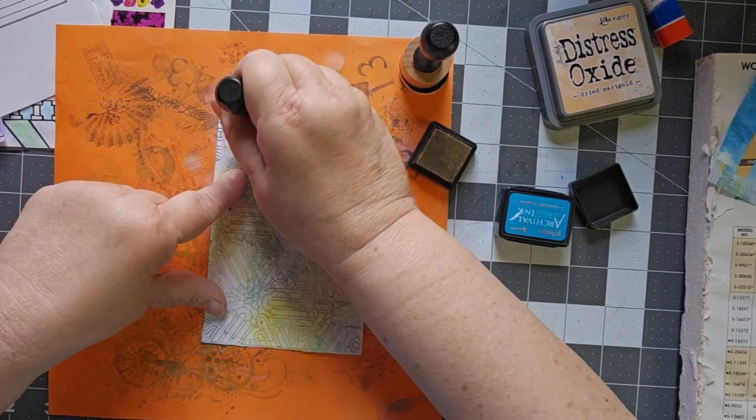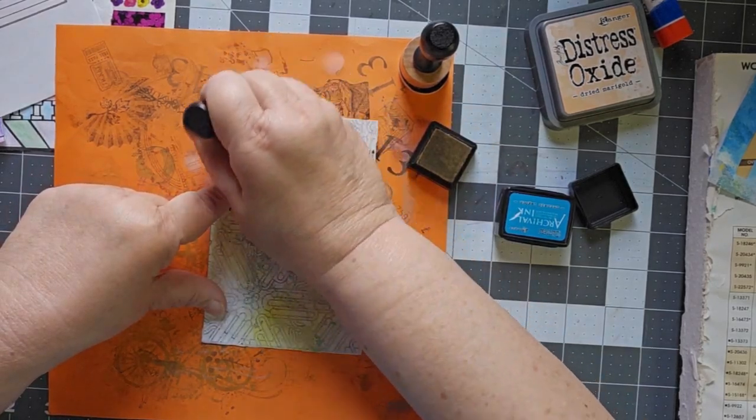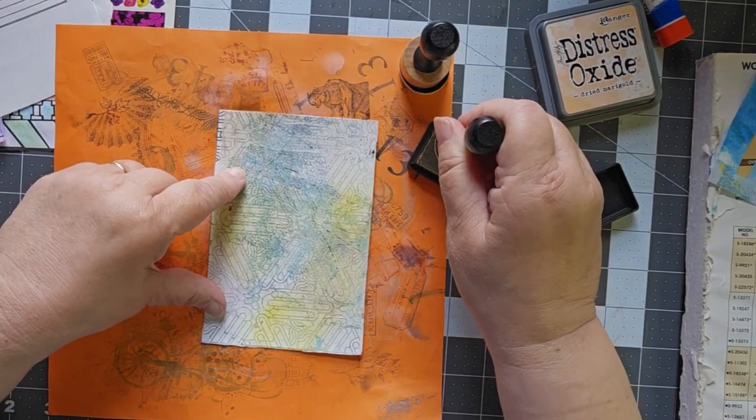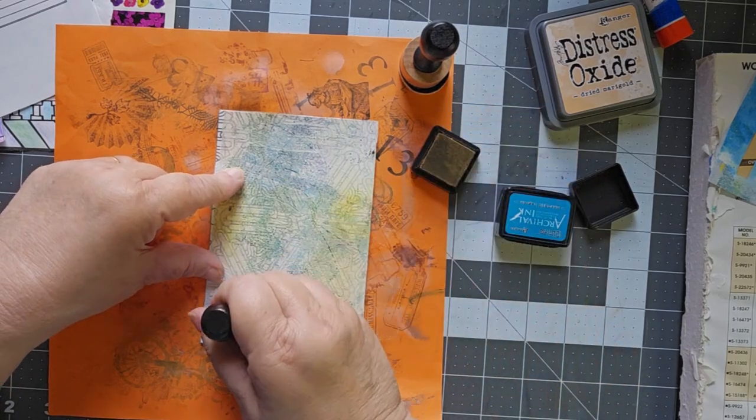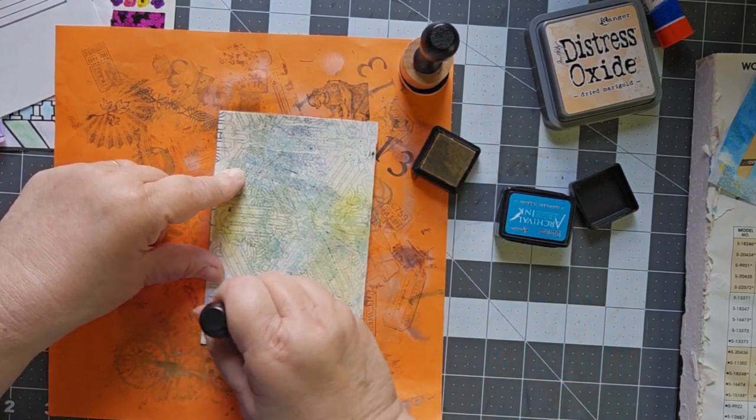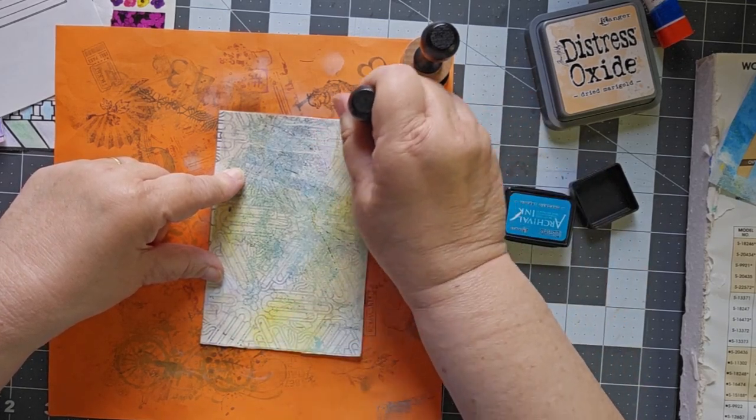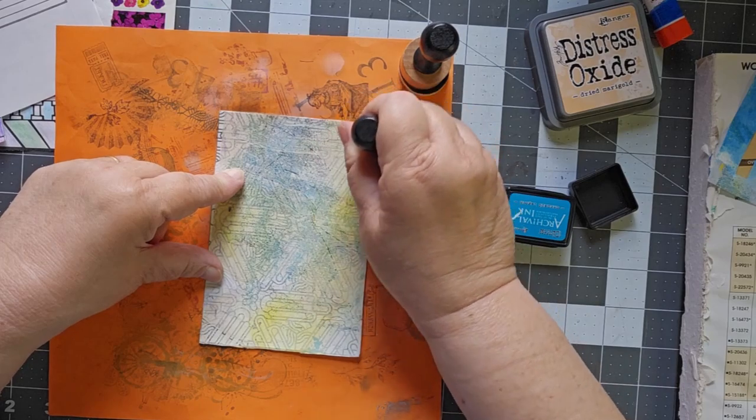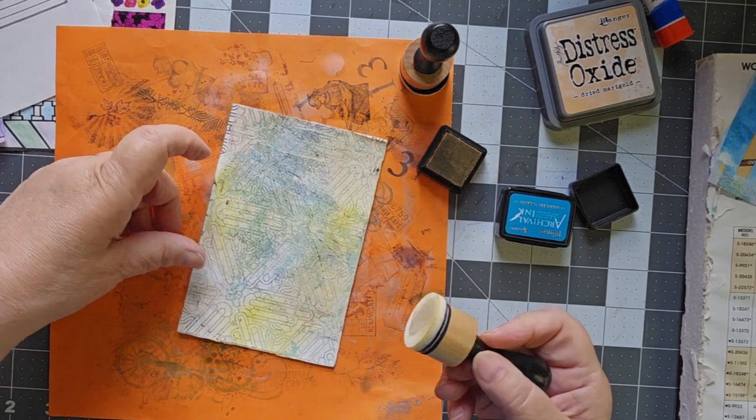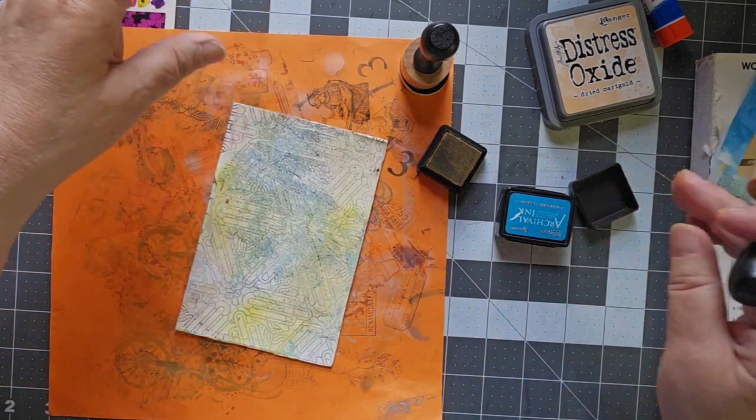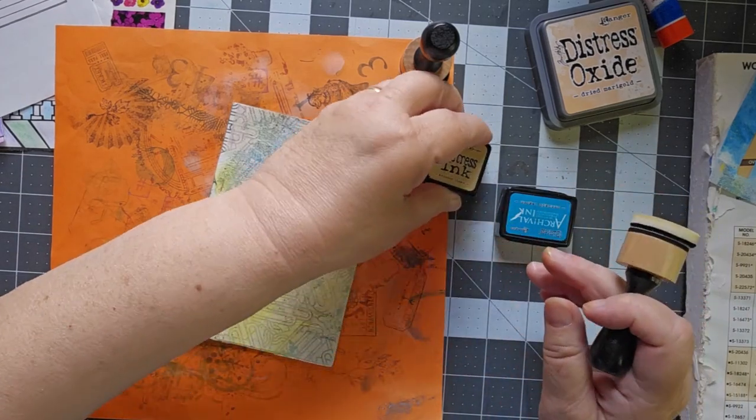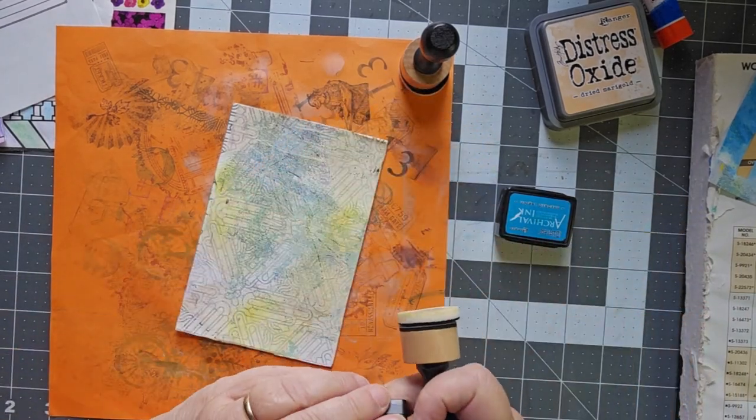And what this is also doing that I didn't expect it to do, but it's really kind of cool, it's picking up the colors of the gel print as well. I'm kind of doing some fun things with those. Okay. Where'd my top go? There it is. That's antique linen.